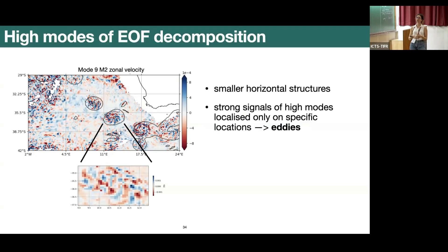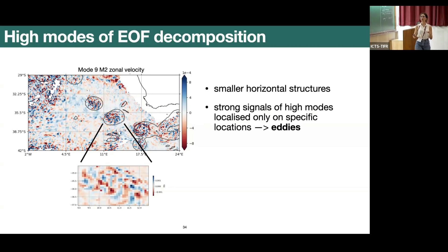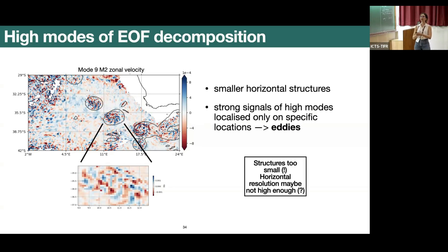Moving to higher modes of the decomposition — here I show mode nine, though modes five to ten look fairly similar — we see much smaller horizontal structures and stronger velocity signals concentrated at specific locations that are very well collocated with the eddies in the area, shown by the contour lines. This is a very interesting result and we believe we see trapping of high modes inside the eddies. However, mode nine structures are very small and our horizontal resolution may not be fully resolving them.